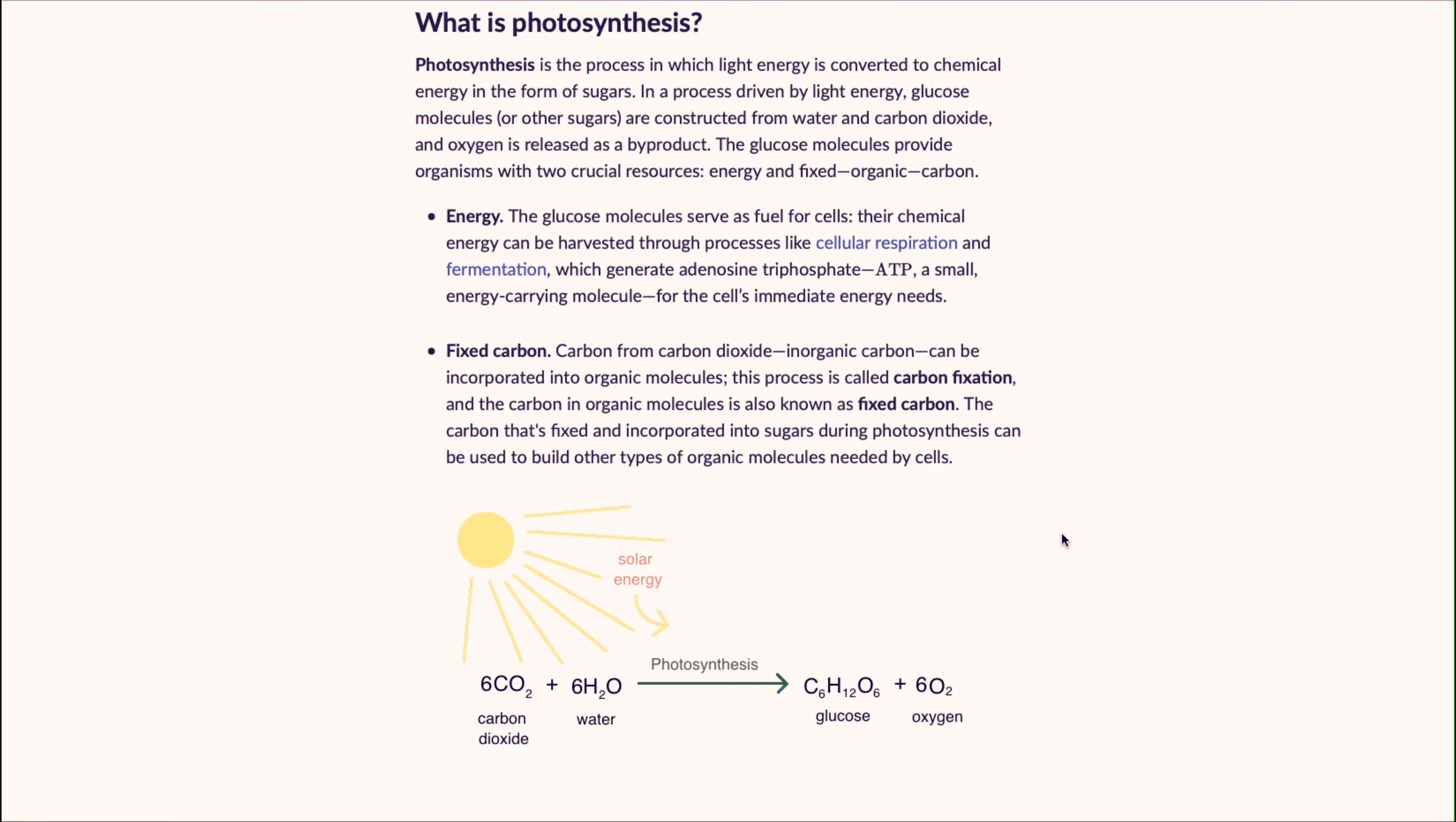Photosynthesis is the process in which light energy is converted to chemical energy in the form of sugars. In a process driven by light energy, glucose molecules are constructed from water and carbon dioxide, and oxygen is released as a byproduct.